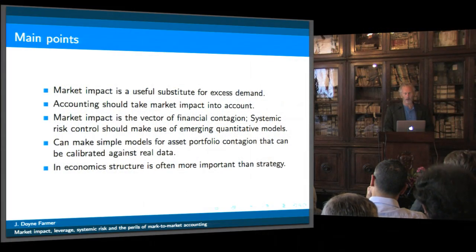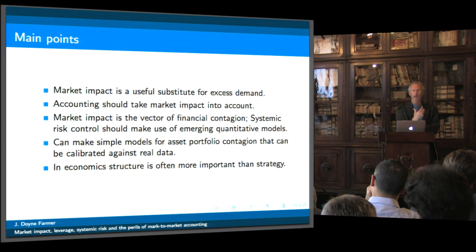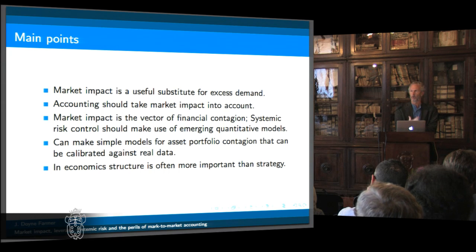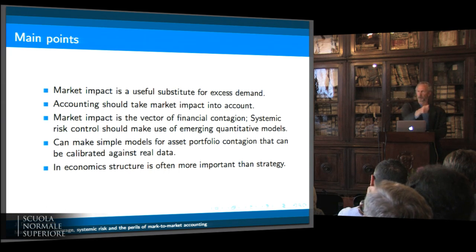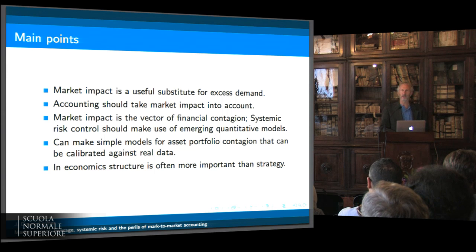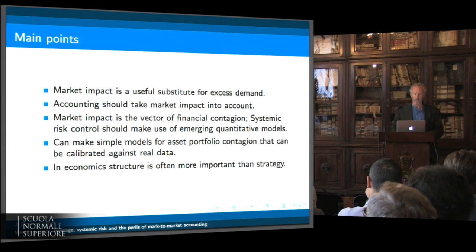Let me summarize. Market impact is a useful substitute for excess demand. Things are simpler when you do them this way, and because we have some idea about the functional form, we're not just making some arbitrary choice with supply and demand functions we're pulling out of the air, or making unrealistic utility assumptions that under some equilibrium give unrealistic answers.